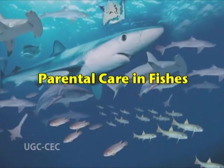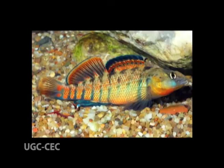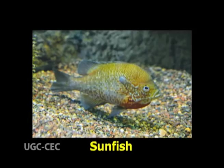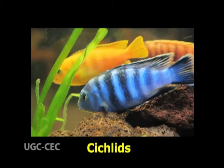Parental care in fishes: a large number of fishes remain careless of their eggs or newborn and leave the spawning grounds after laying eggs. However, many fishes exhibit parental care. Various devices have been adopted to ensure proper development of eggs into adults; one or both sexes may participate. Formation of nests: in many fishes, the male Ethostoma sunfish stimulates and makes shallow basin-like nests for laying eggs by the females.